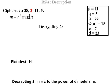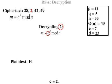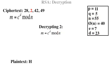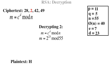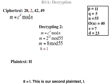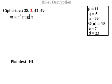Decrypting 2: M equals C to the power of D mod N, where C equals 2, D equals 23, N equals 55. So M equals 2 to the power of 23 mod 55. M equals 8 mod 55. 8 equals I. This is our second plaintext: I.